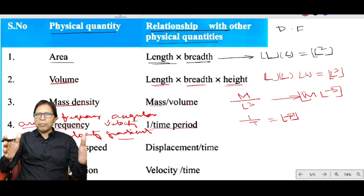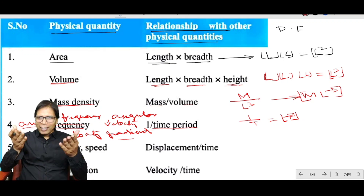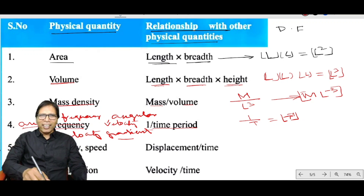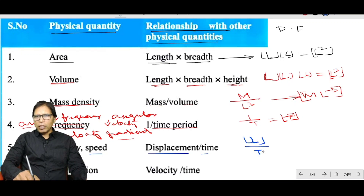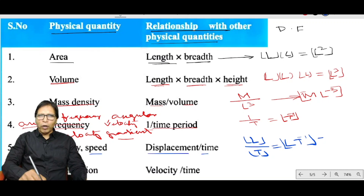Velocity or speed is displacement divided by time. The dimensional formula of displacement is L and time is T, so the dimensional formula of velocity or speed is LT⁻¹.